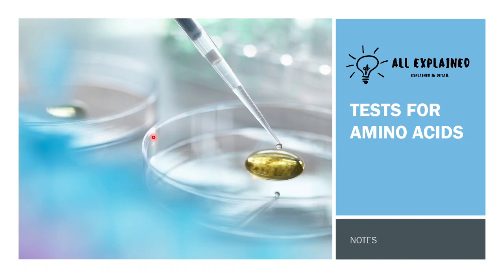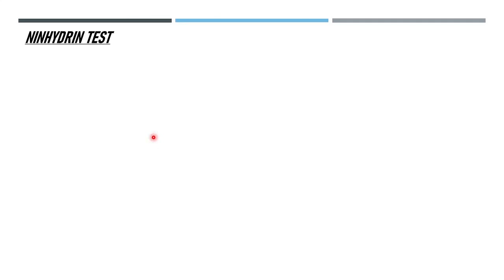Let's look at certain tests used to test amino acids in laboratories. The first one is the ninhydrin test, which is a very famous one because it is used to develop fingerprints by forensic experts.